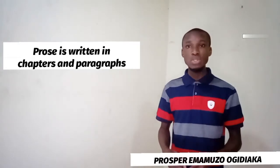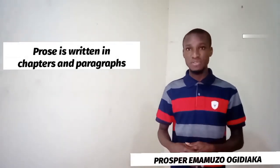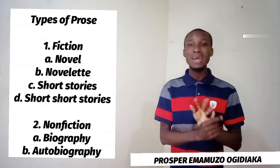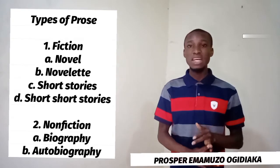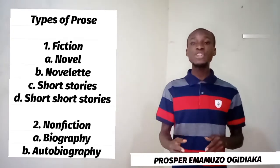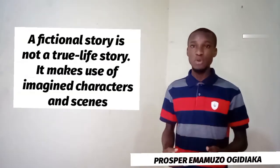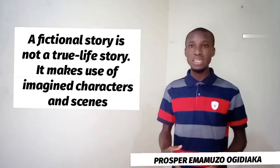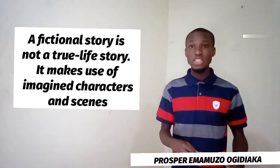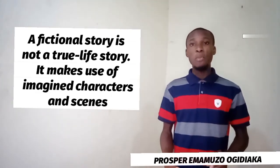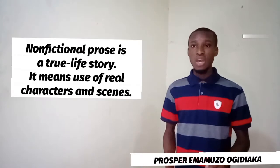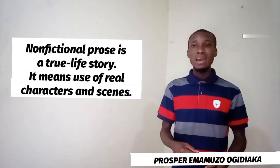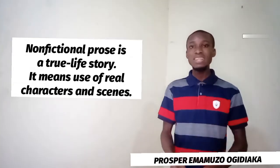Prose is organized within chapters and paragraphs. It has two types: fiction and nonfiction. A fictional prose is that kind of prose that is not a real-life story — we can say it is fake, created out of nothing, just to teach a particular thing. Non-fictional prose, on the other hand, is written from something that is a true life story.